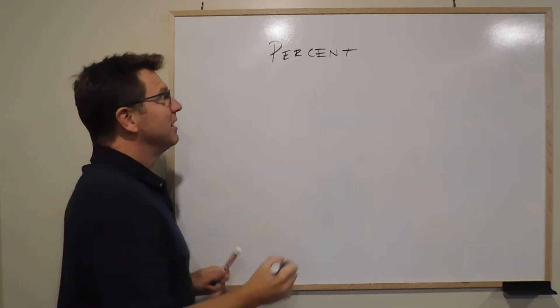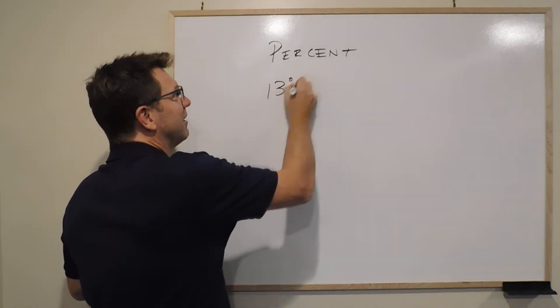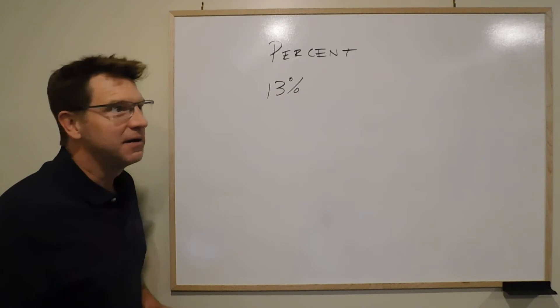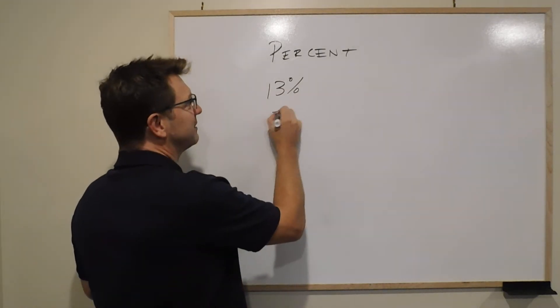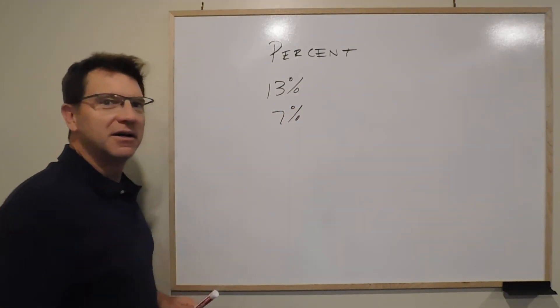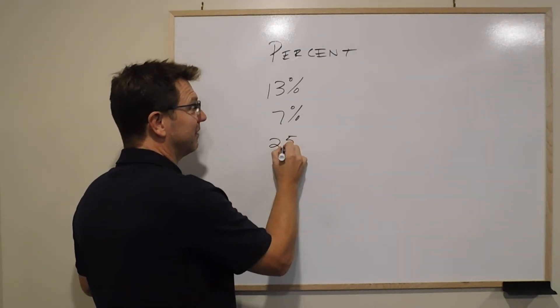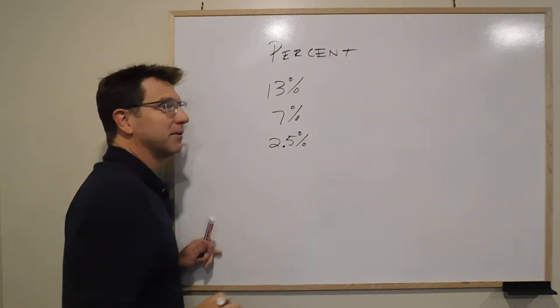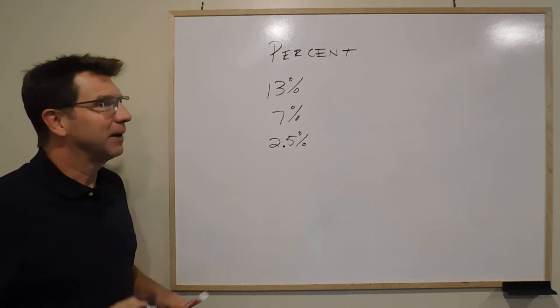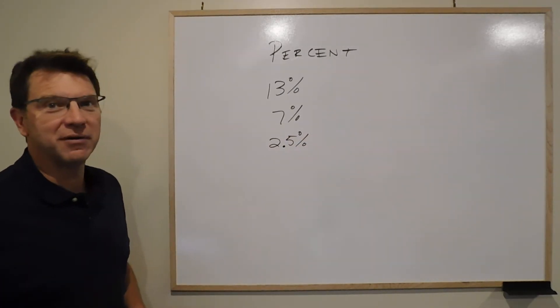You can't get away from it, right? You pay 13% tax. You might have a car loan at 7%. You might have a mortgage at, these days they're really good, maybe 2.5%. You might try and put some savings in a bank account, which is at maybe 1%.